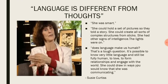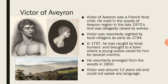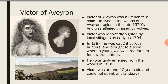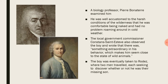The next case is Victor of Aveyron. Victor is a French feral child who lived in the woods of the Aveyron region in the late 1790s and was allegedly raised by wolves. Victor was reportedly sighted by local villagers as early as 1794, and in 1797 he was caught by local hunters and brought to a town. A young widow cared for him there for several months, but he managed to escape and return to the woods. He voluntarily emerged from the woods in 1800 at around 12 years old and could not speak any language. A biology professor, Pierre Joseph Bonaterre — a priest, naturalist, and co-author of an encyclopedia of the animal world — examined him.